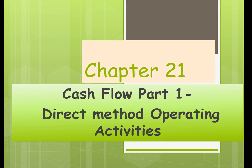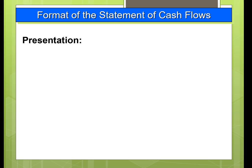Chapter 21 on cash flow will have three parts. First, I will go over the direct method for operating activities, then the indirect method in part two, and in part three I'll go through the whole cash flow statement. GAAP would like you to do the direct method and then the indirect method, which is probably why most people would rather just do the indirect method — but we'll start with the direct method.